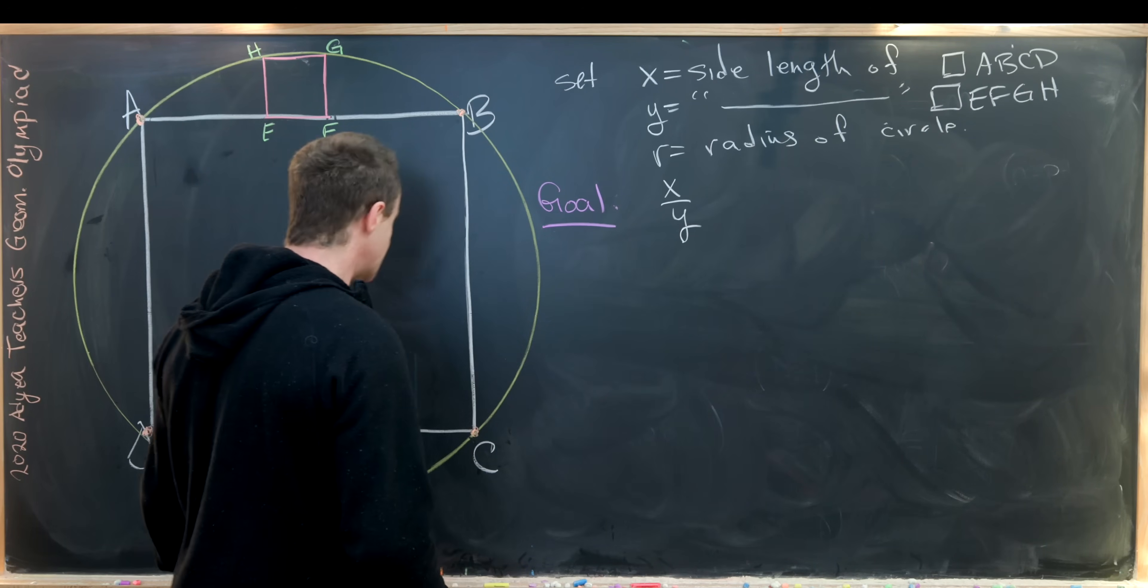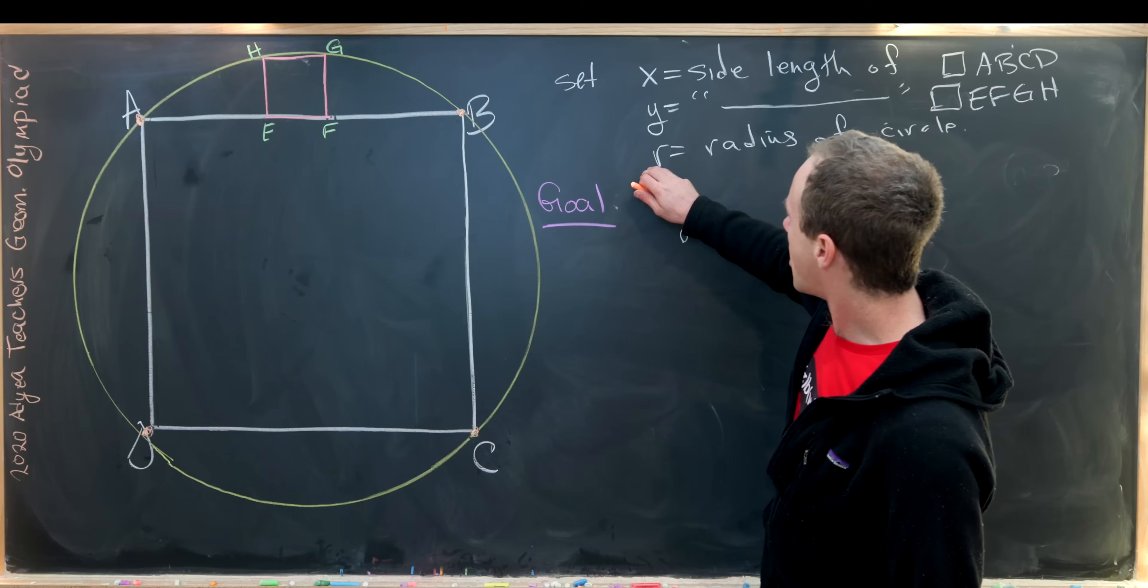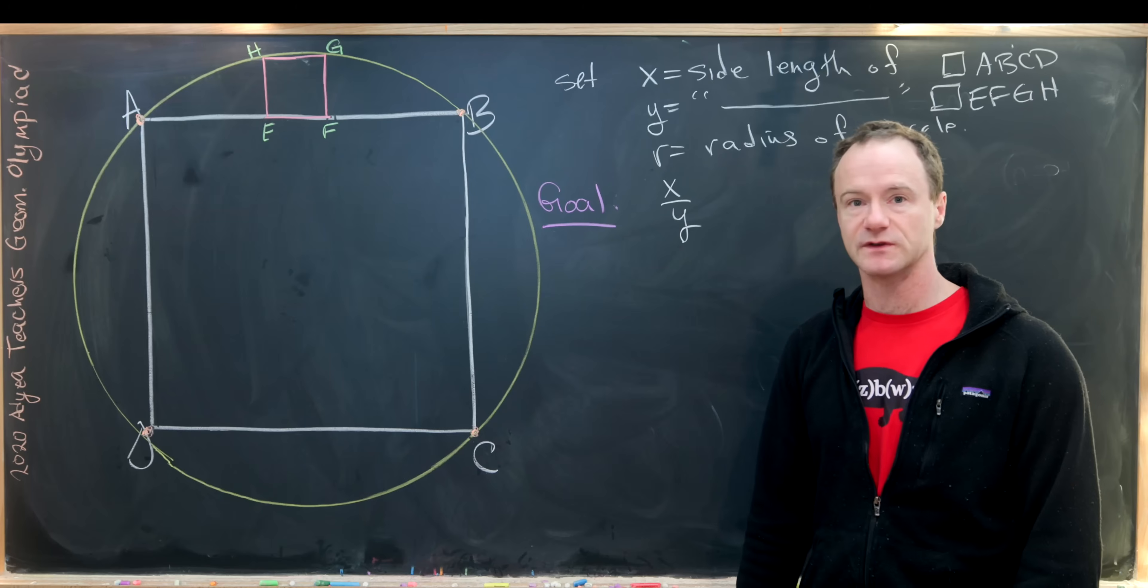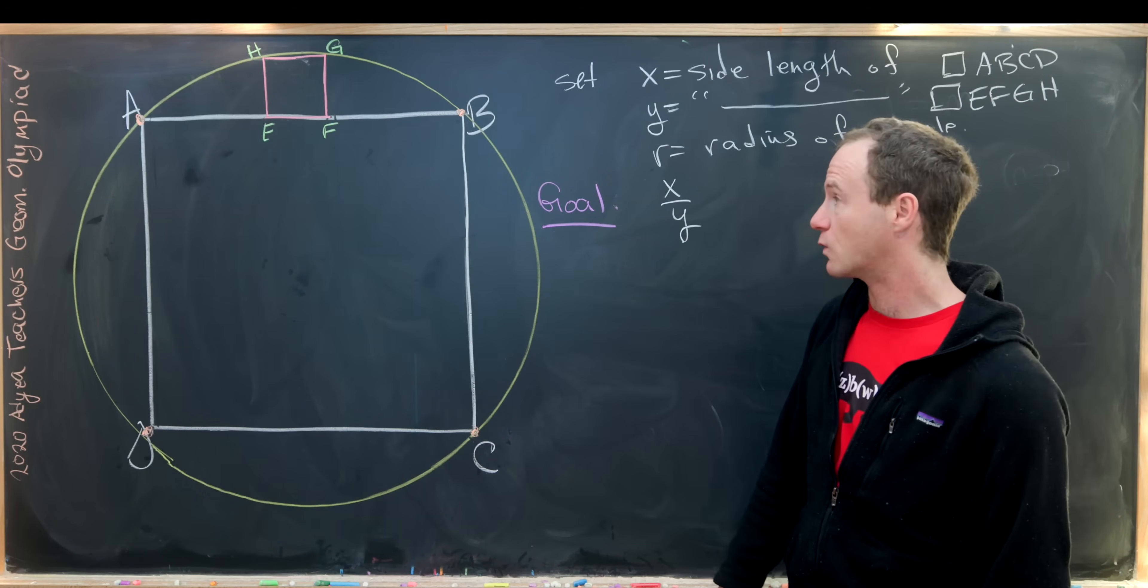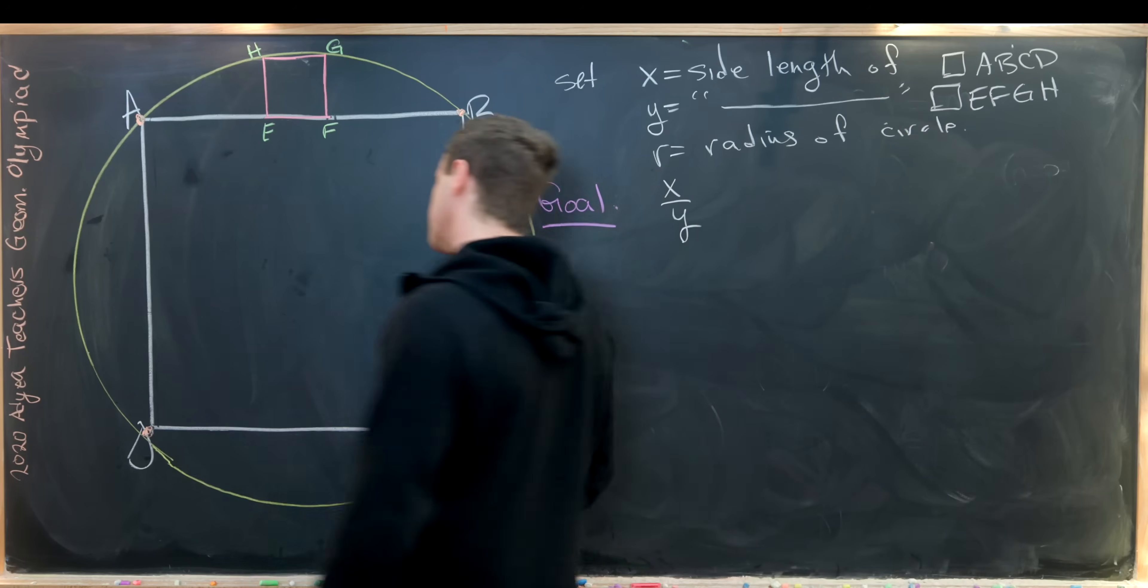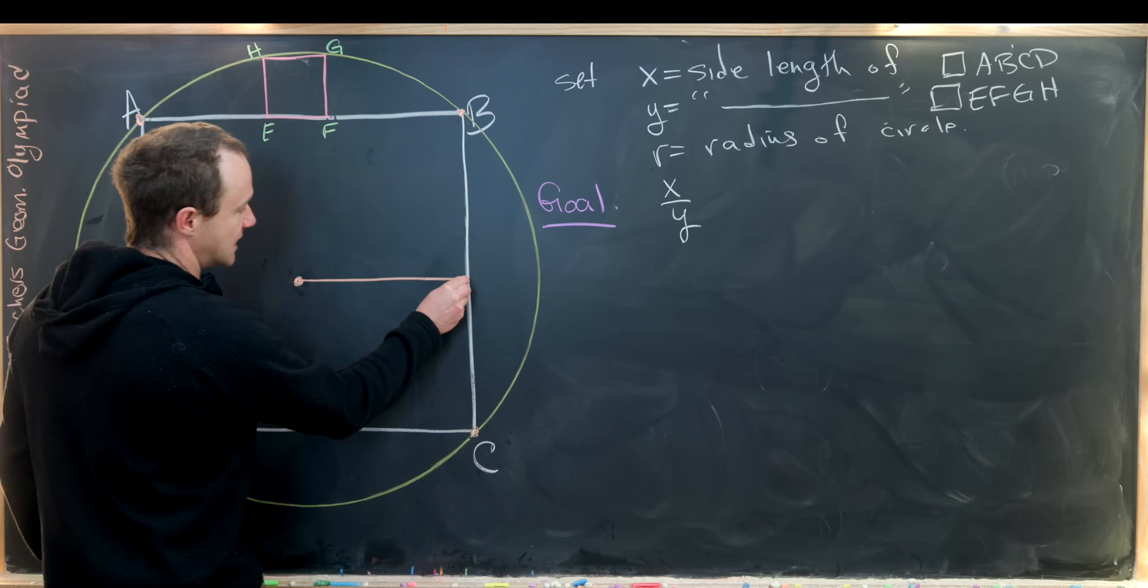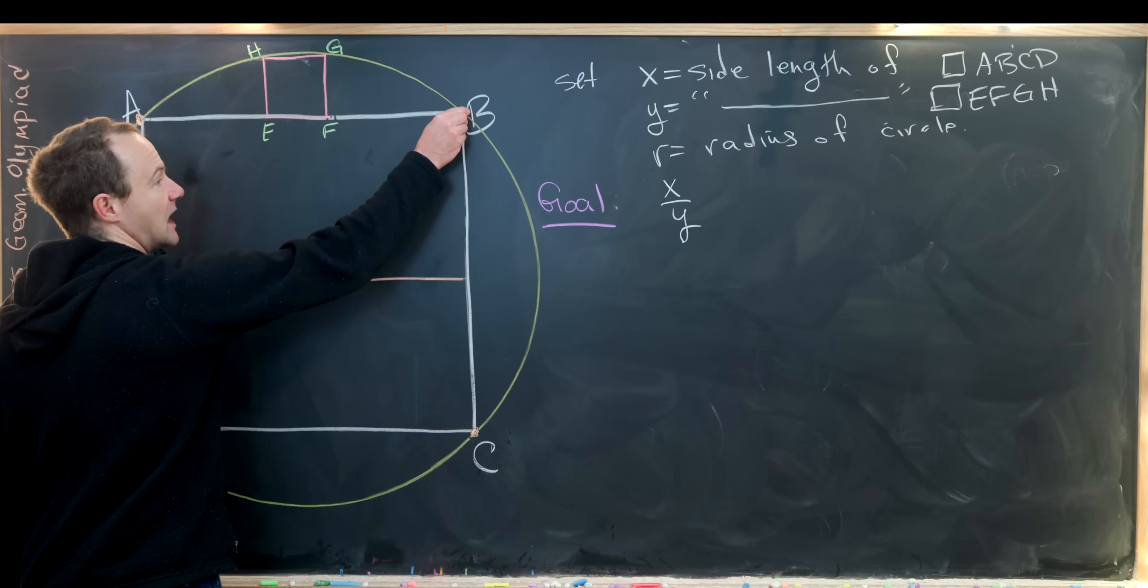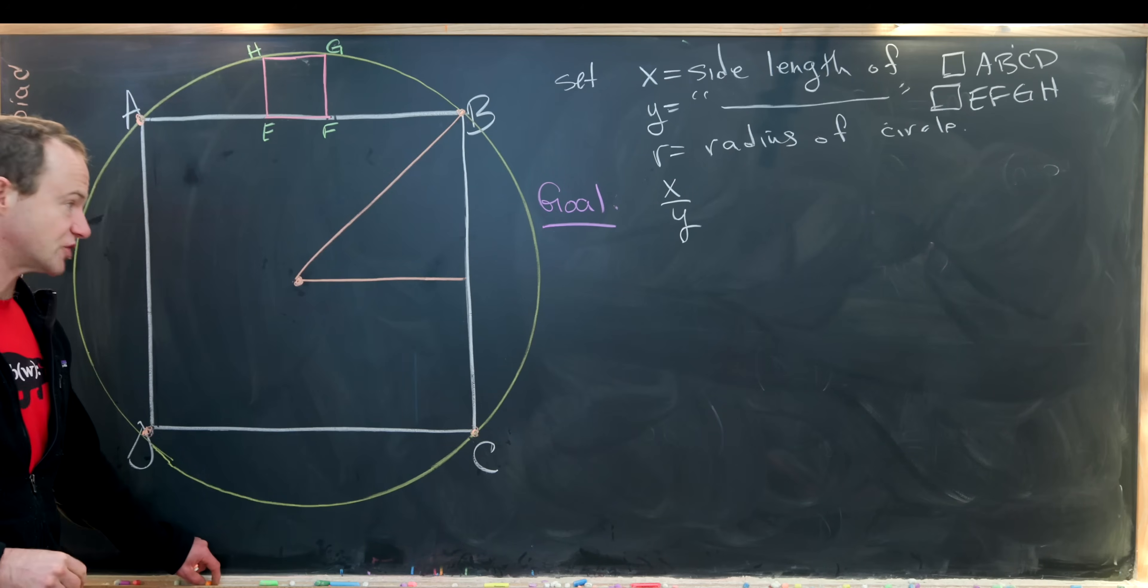We're going to introduce some triangles into this situation in order to write R in terms of X and then in order to write X in terms of Y. So let's start with the triangle that will be used to write R in terms of X. So I'll start here at the center of the circle. And then I'll draw a line to the side length of the square this way. And then a line to the vertex of the square this way.